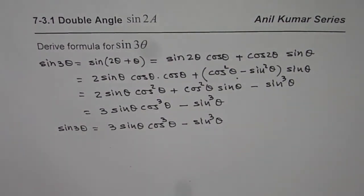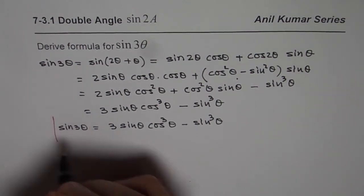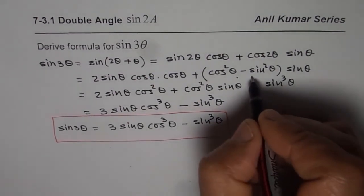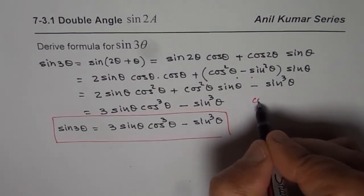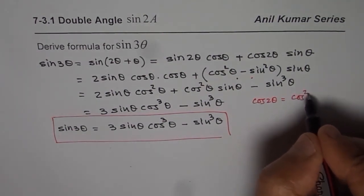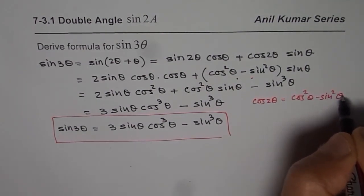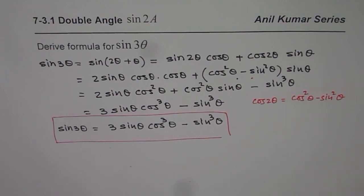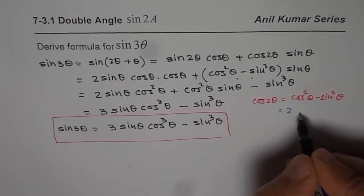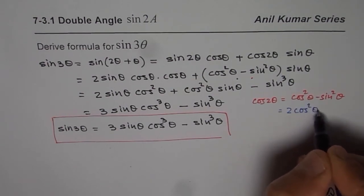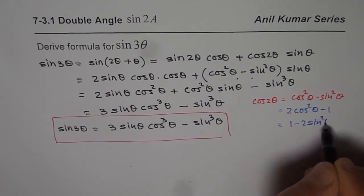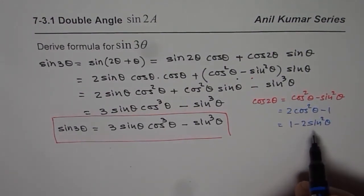So that's how we can do it. Now my recommendation is that in this particular derivation, we used cos 2θ as cos² θ minus sin² θ. Instead of that, if you use the formula 2 cos² θ minus 1 or 1 minus 2 sin² θ, then what result do you get?